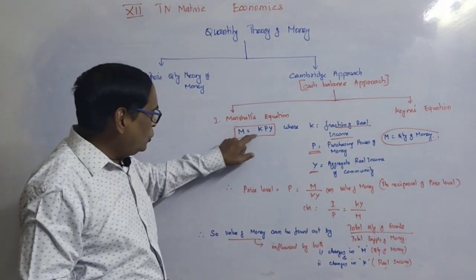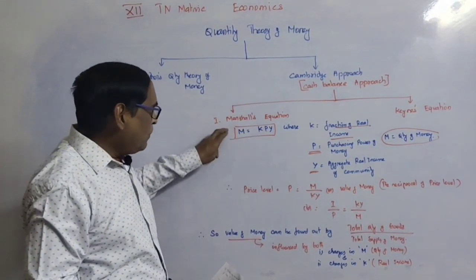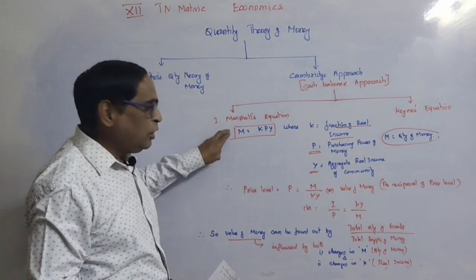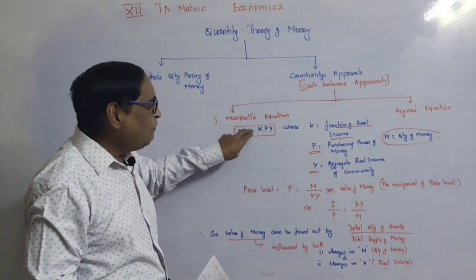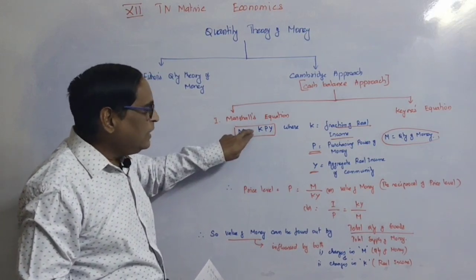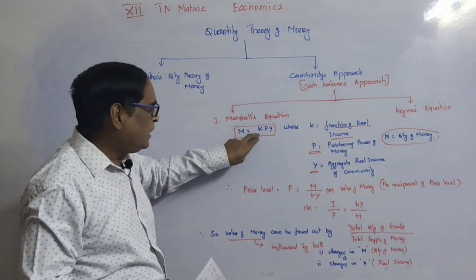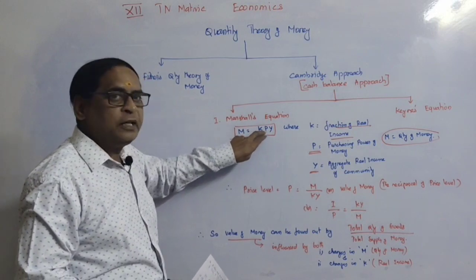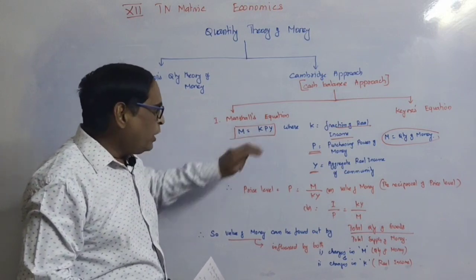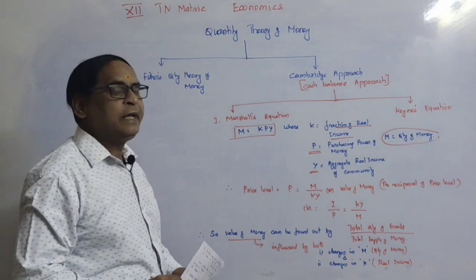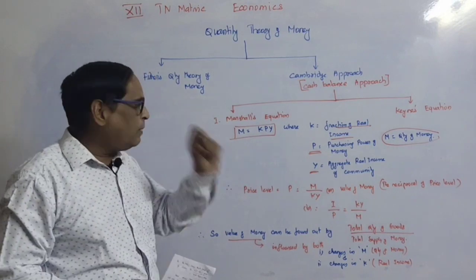So, M is equal to KPY. M is the quantity of money. K is the fraction of the real income that the public desires to have. P is the purchasing power of money. Y is the aggregate real income of the total community.